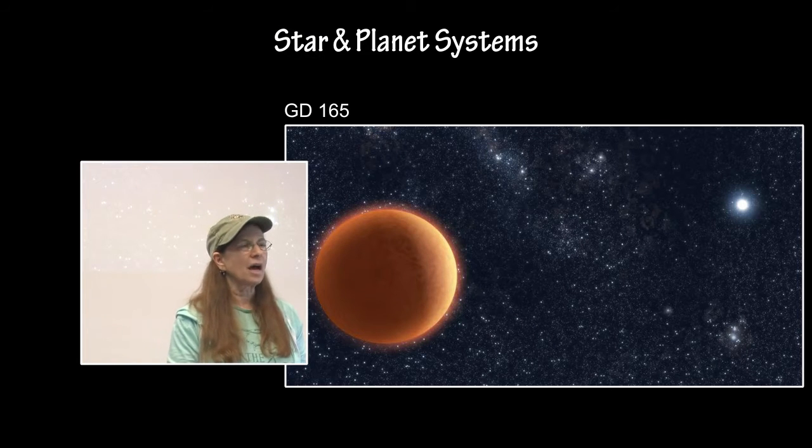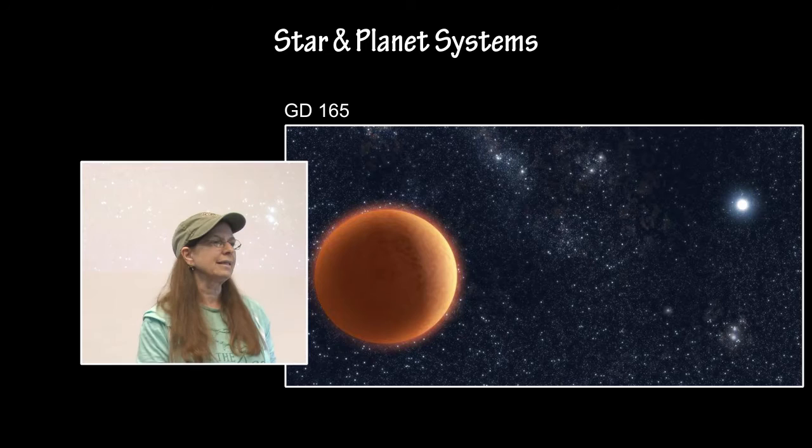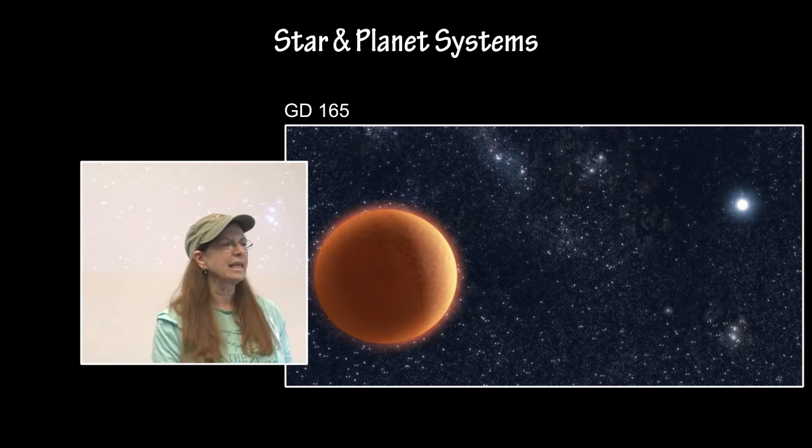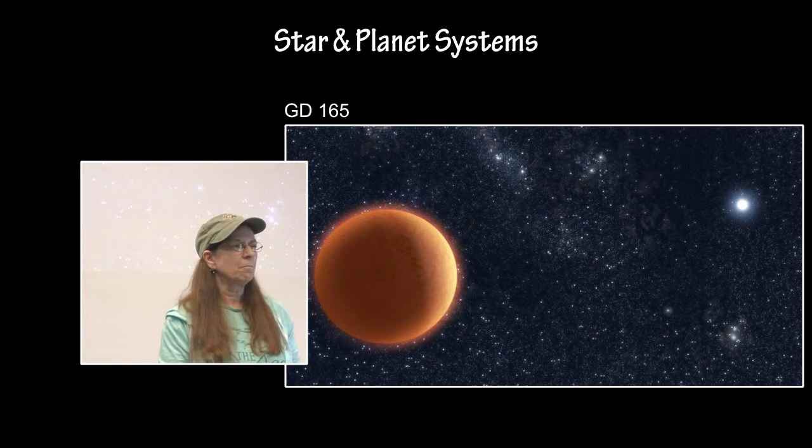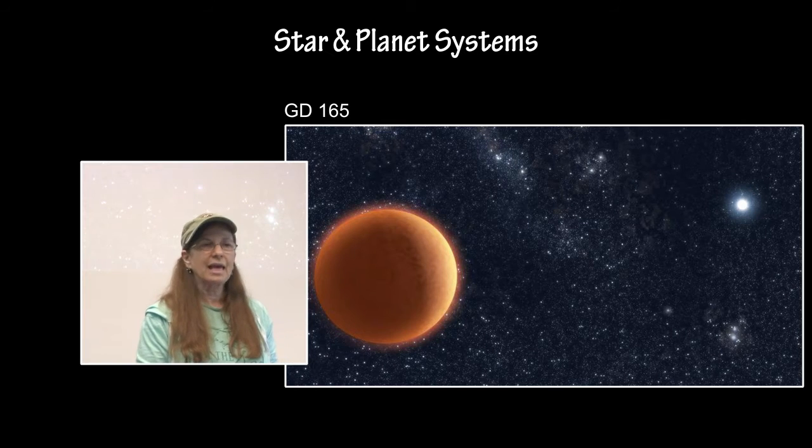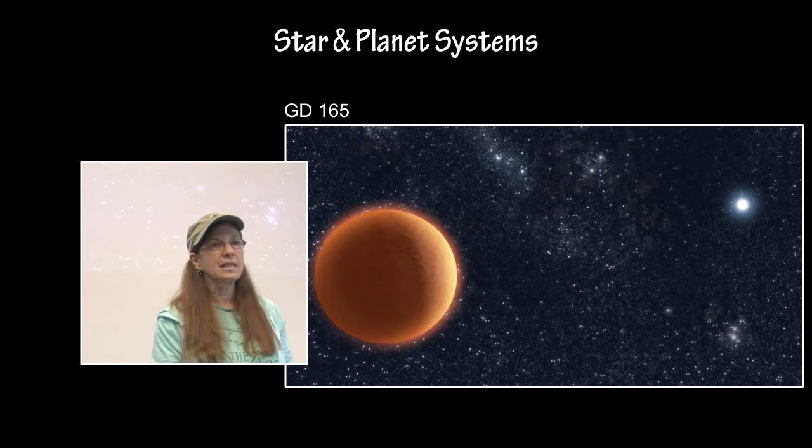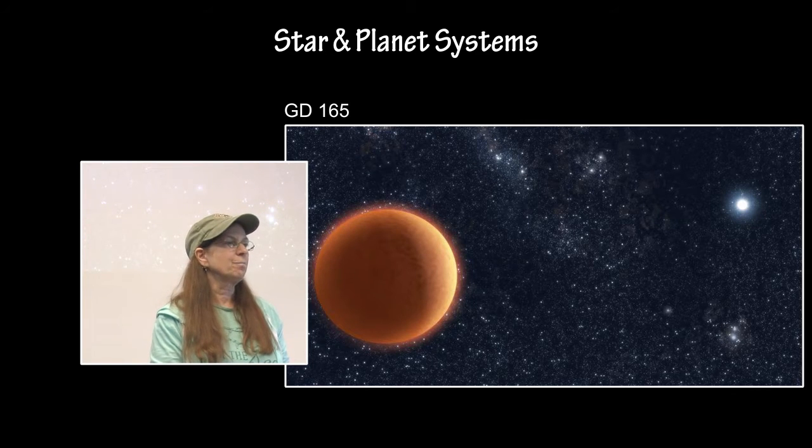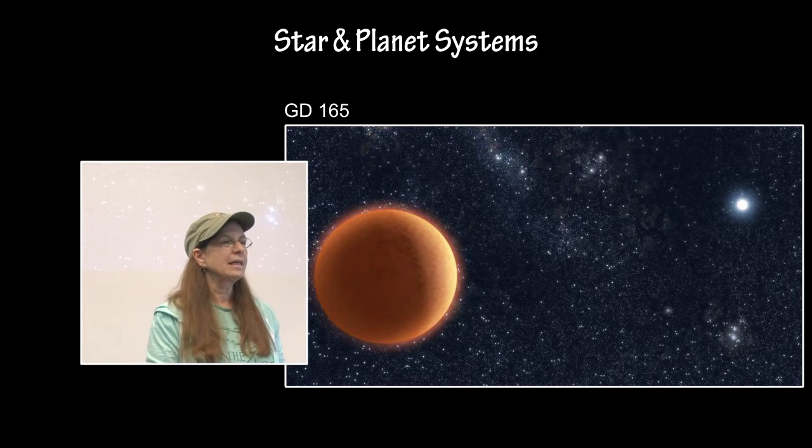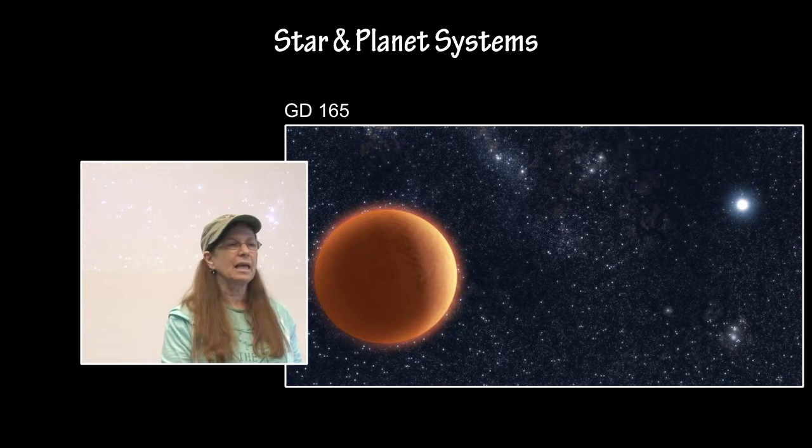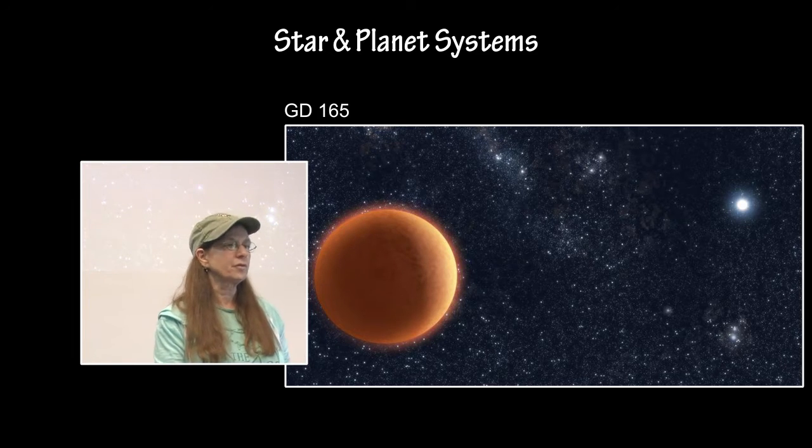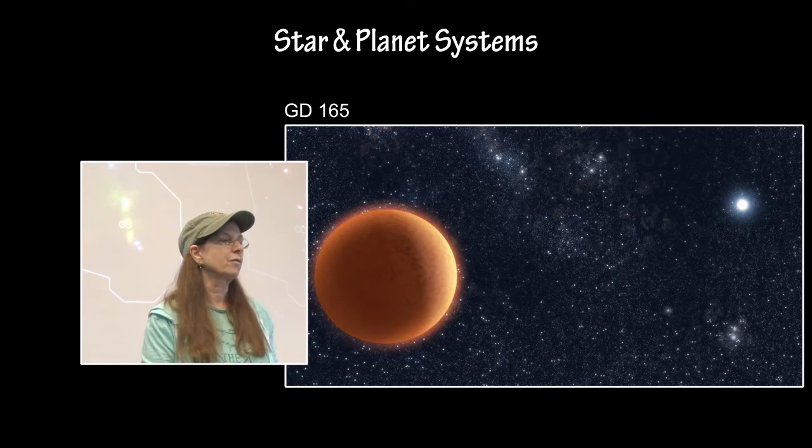GD-165, it took a while to finally determine that actually what they were seeing was GD-165a, which is actually an L-type brown dwarf. This was the very first detected spectral class L, cool brown dwarf, and it is orbiting a companion that is a white dwarf star, white dwarf stellar core.